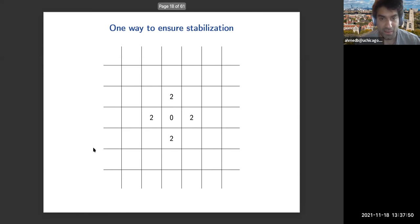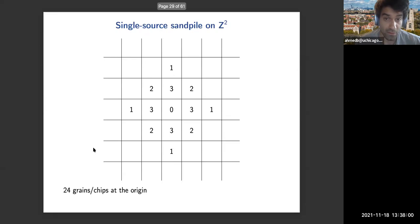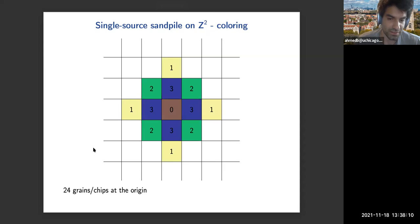Here we're starting with four chips at the origin on the square lattice with nearest neighbor edges. Every site has degree four, so the origin is unstable and we can topple it. We're just going to keep adding chips at the origin, and we see that we're always going to end up with a well-defined final stable sandpile. We're going to look at larger and larger stacks of chips at the origin—this is called the single source sandpile.